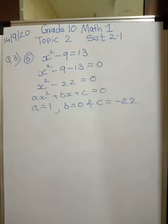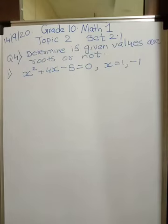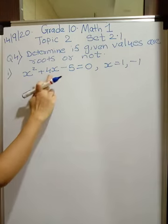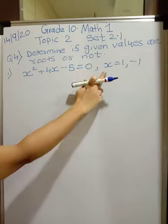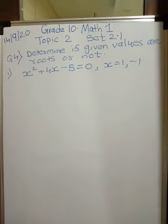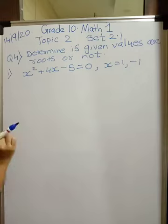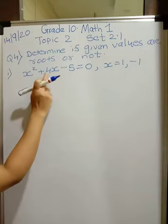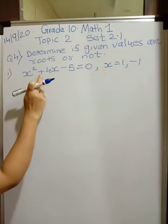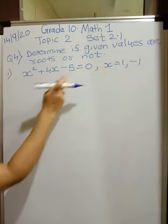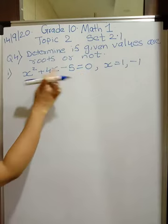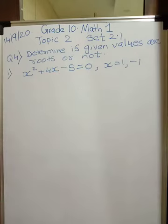Now let us go for the fourth question. The fourth question is: determine if given values are roots or not. The equation given is x² + 4x − 5 = 0, and the x values given are 1 and −1. What does being a root or solution mean? That means if I put the x value in the equation, my left-hand side should be equal to the right-hand side, which is 0. So if I substitute x = 1 or x = −1 and get 0, that value is a root.